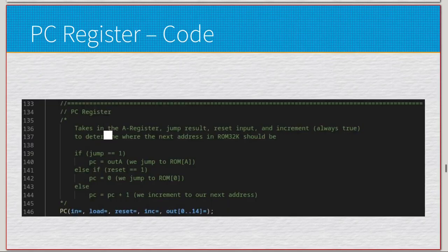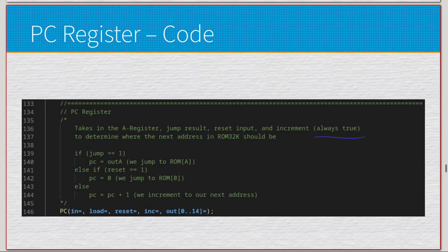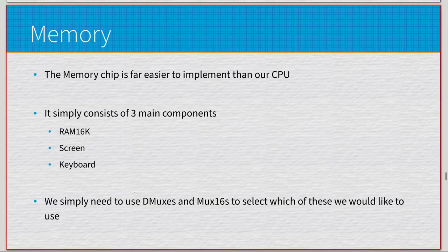It's a single line — it takes in the A register, jump result, reset input, and increment (always true) to determine where the next address in ROM 32K should be. If jump equals one, PC equals out_A; else if reset equals one, PC equals zero; else PC equals PC plus one, incrementing to the next address. That's pretty much the program counter.